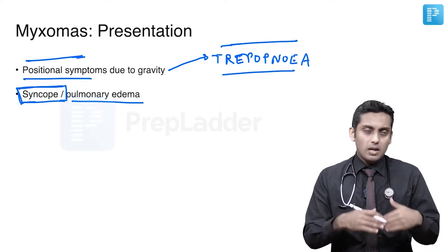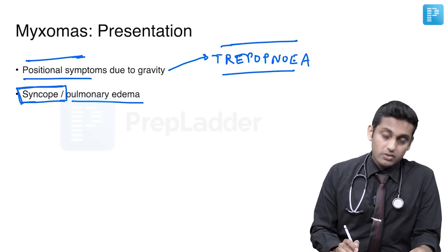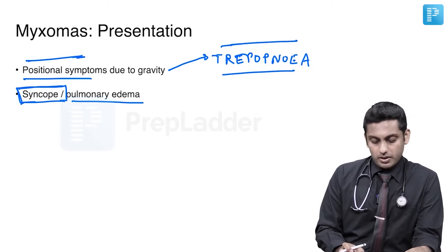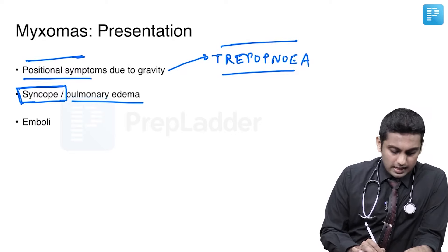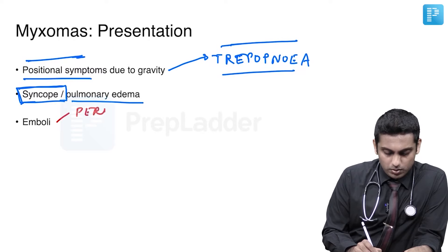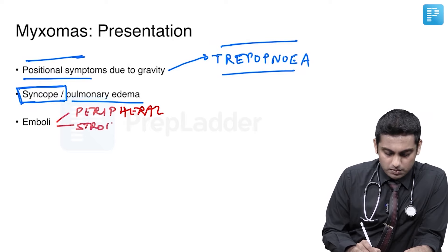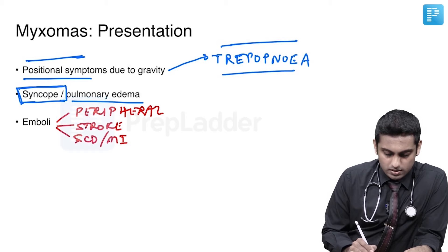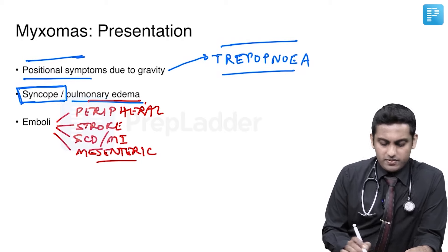Pulmonary edema is seen just like a mitral stenosis patient presents with pulmonary edema, because of elevated left atrial pressure. Emboli in myxomas can be of multiple types: peripheral emboli causing acute limb ischemia, cerebral emboli causing stroke, sudden cardiac death or myocardial infarction, and other peripheral emboli including mesenteric and other manifestations.